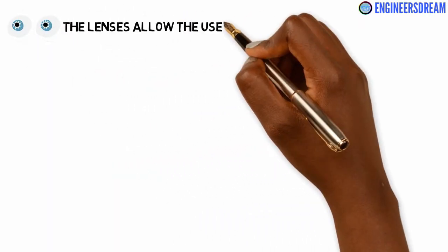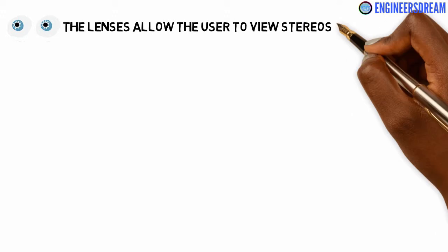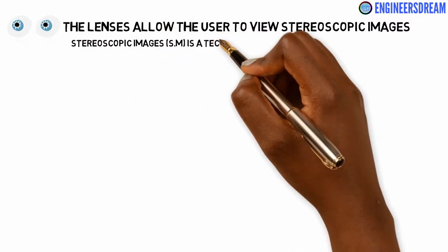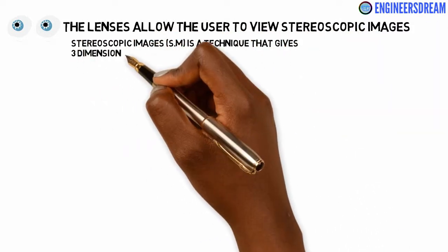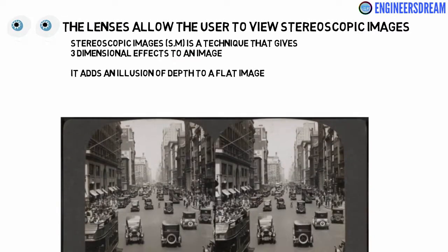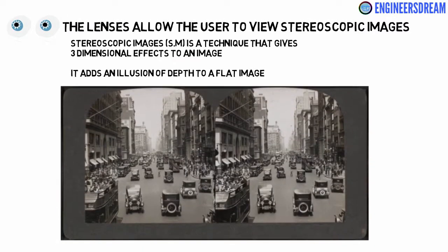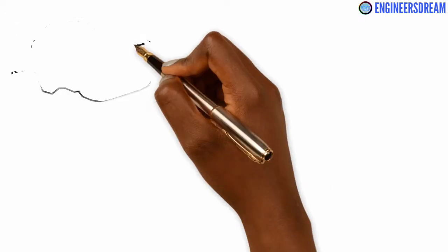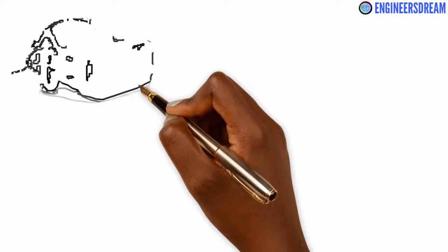Both these VR headsets consist of a pair of lenses which allow the user to view stereoscopic images. Stereoscopic imagery is a technique that gives a three-dimensional effect, or 3D effect, to an image — it basically adds an illusion of depth to a flat image.